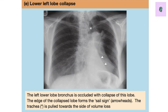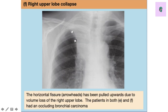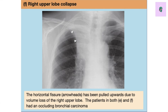Next is right upper lobe collapse. You can see the horizontal fissure — indicated by the arrowhead — has been pulled upward due to volume loss of the right upper lobe. Both this case and the lower left lobe collapse involve an occluding bronchial carcinoma. In the exam they will give you a clinical scenario about bronchial carcinoma, show you this image, and ask for the diagnosis. If you've seen it before, you'll recognize right upper lobe collapse immediately without even reading the full question stem.